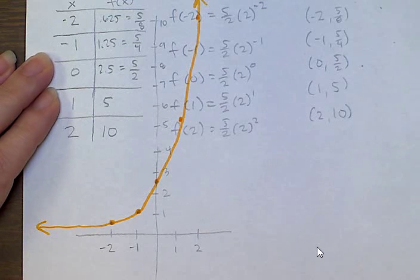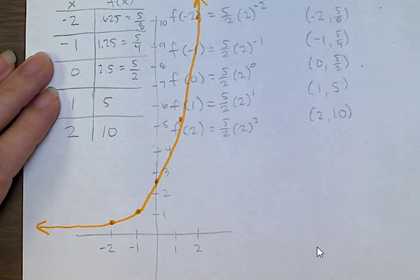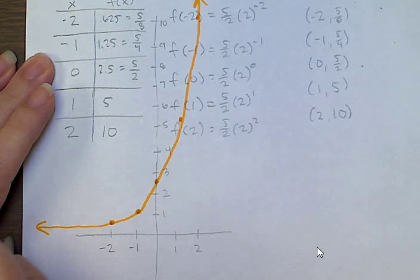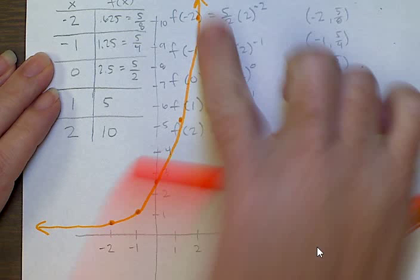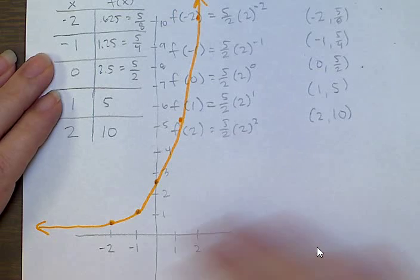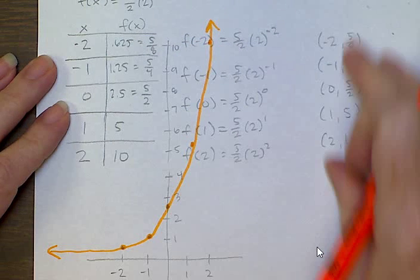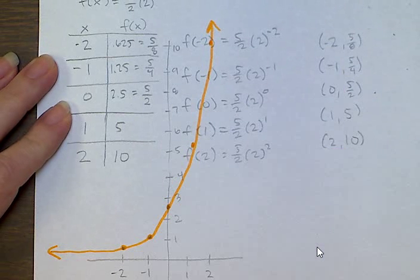When you are on ALEKS, you're going to plot the 5 points using the point plotter, letting ALEKS place them precisely where they're supposed to be. Then press graph and it will draw the line for you. So you need to make the table, get the points, plot the 5 points, and then press the graph button.